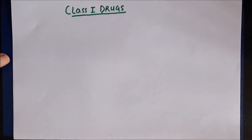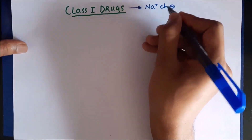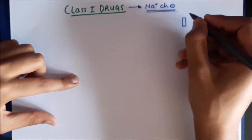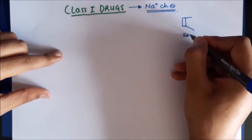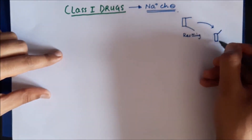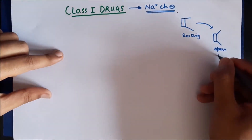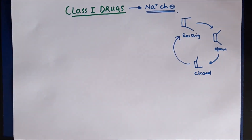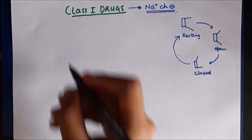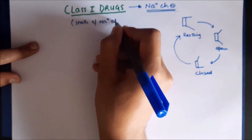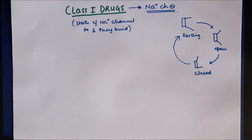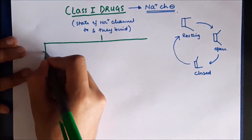We are going to discuss Class 1 anti-arrhythmic drugs. As we studied in the previous lecture, Class 1 anti-arrhythmic drugs are all sodium channel blockers. There are various states of sodium channels: the resting or ready state, followed by the open or active state, then the inactive or closed state, from which channels return to the resting state. Depending on which state the drugs bind to, they are further classified into three subtypes.